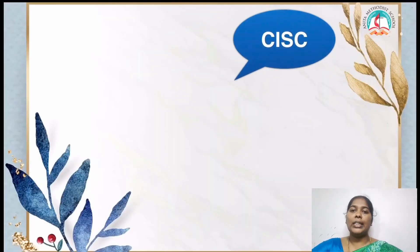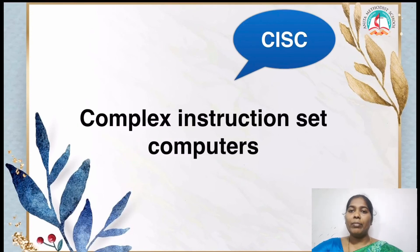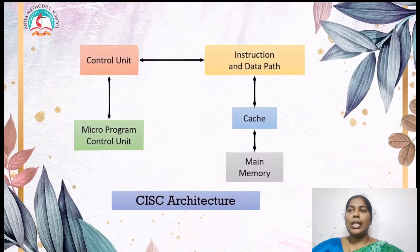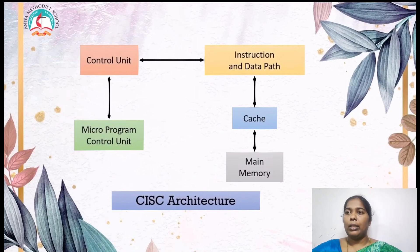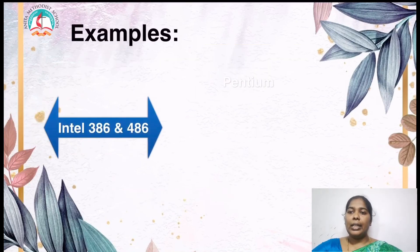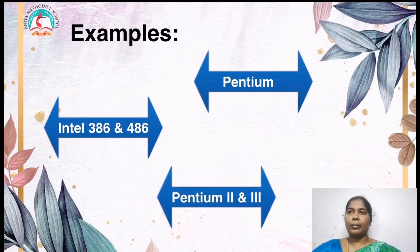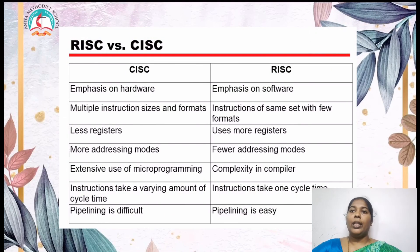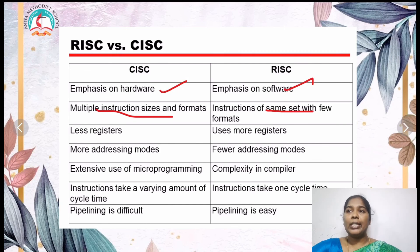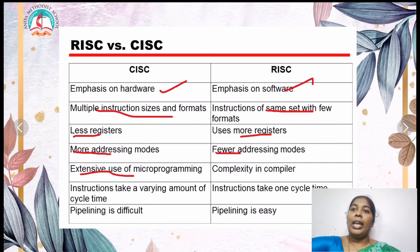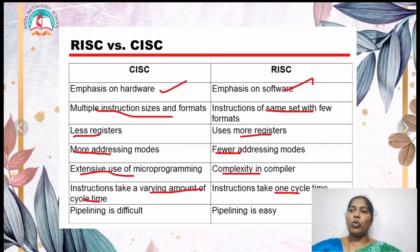CISC stands for Complex Instruction Set Computers — it can execute or perform tasks with complex instructions as well. It uses a microprogram control unit so that even small complex programs are handled. Examples include Intel 486, Pentium, Pentium 2, and Pentium 3. Key differences: CISC emphasizes hardware while RISC emphasizes software; CISC has multiple instruction sizes and formats while RISC has fixed instruction size; CISC has fewer registers while RISC has more; CISC has more addressing modes while RISC has fewer; CISC uses extensive microprogramming and instructions take varying amounts of time, while RISC instructions take one cycle.